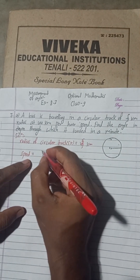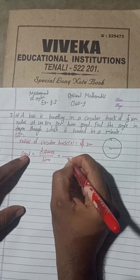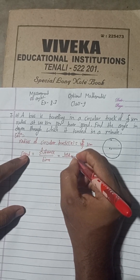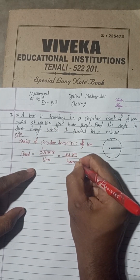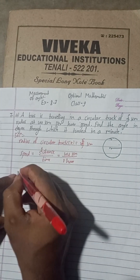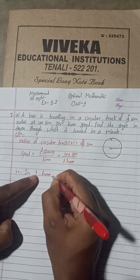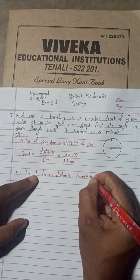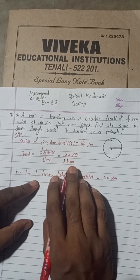At 44 kilometer per hour speed — the speed formula is: speed is equal to distance by time. Distance traveled is 44 kilometers; time is per hour, meaning one hour. So from this formula we can write that in one hour, distance traveled is equal to 44 kilometers.